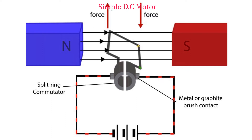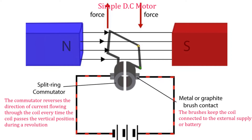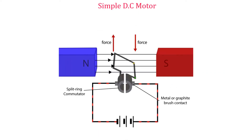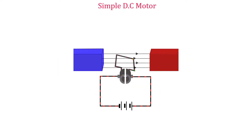The function of the commutator is to reverse the direction of current flowing through the coil every time the coil just passes the vertical position during the revolution. Pressing against the commutator are carbon brushes. The brushes keep the coil connected to the external supply or battery. As current flows through the coil, the current moves from the positive terminal, travels through the coil, and back to the negative terminal.